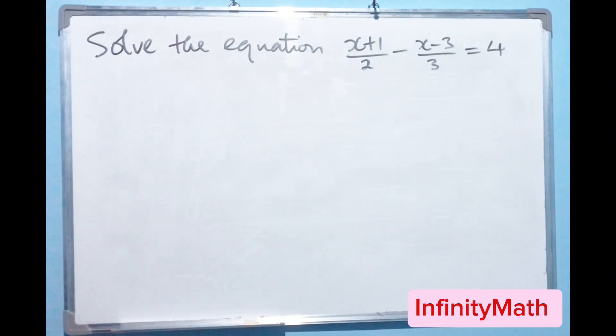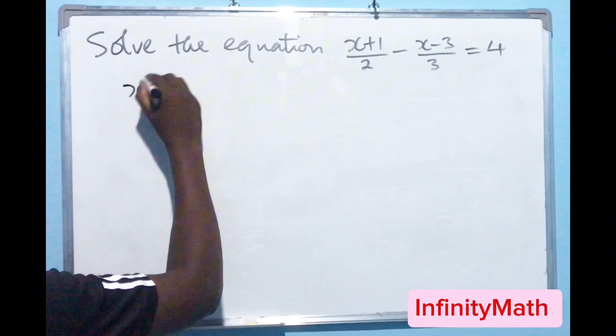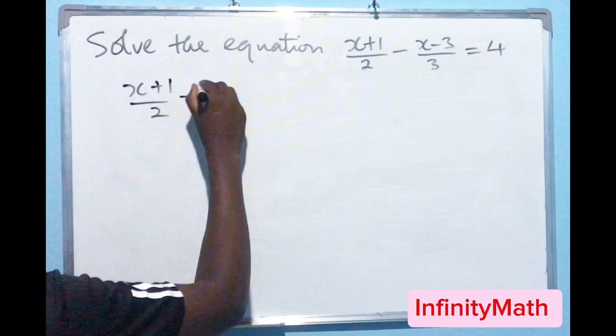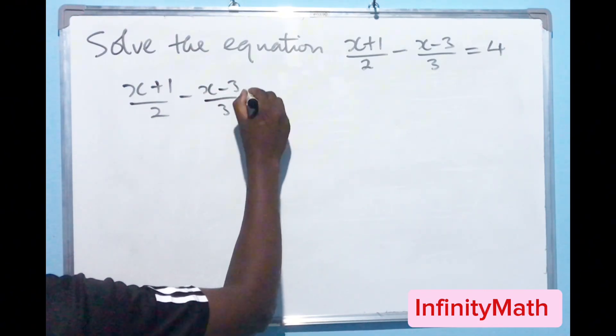What we need to do is this. We have x plus 1 over 2 minus x minus 3 over 3 equals to 4.